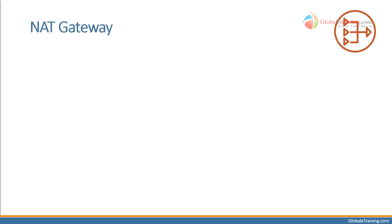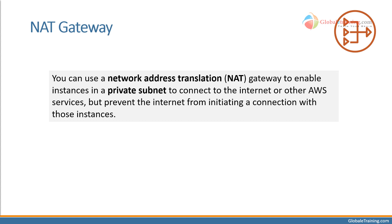NAT gateway is used to provide internet to your private subnet. When you create subnets within your VPC, if you choose to provide internet to a subnet, it is referred to as a public subnet.